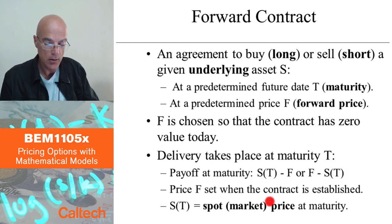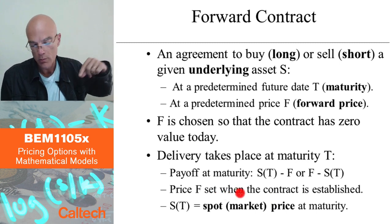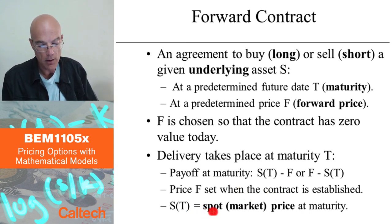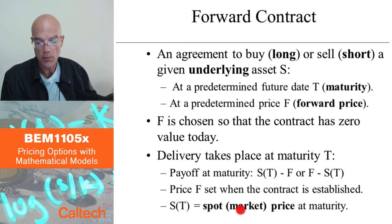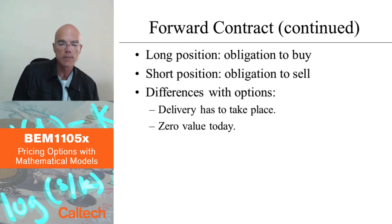Just to make sure we remember: the forward price F, although it is paid in the future, is known today when we enter the contract — it is determined at the beginning of the contract. S(T) is also called the spot or market price at time T, at maturity, as opposed to the forward price. You can talk about the forward price and about the spot or market price — the price at which you can buy it right at that moment.